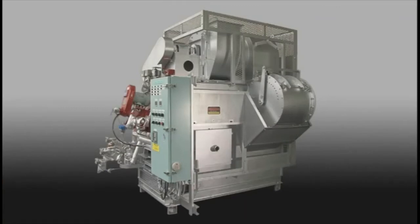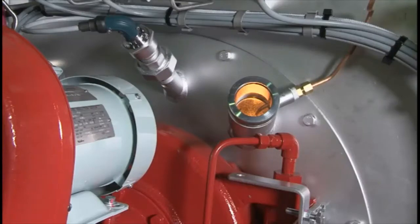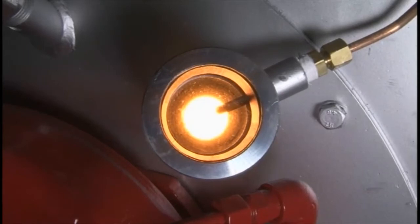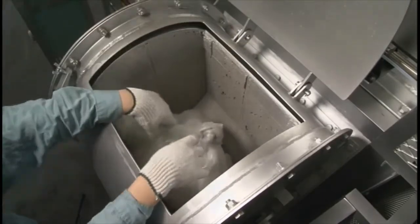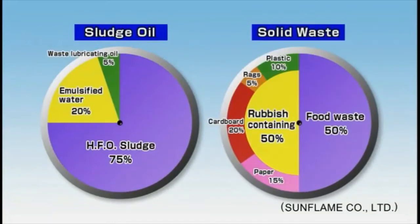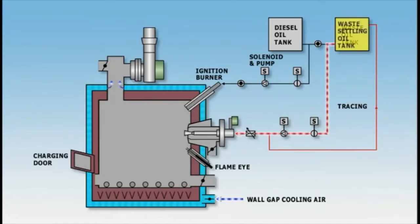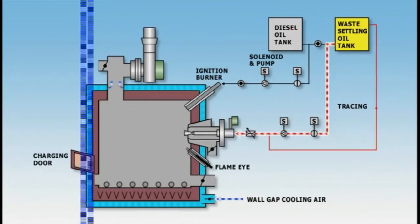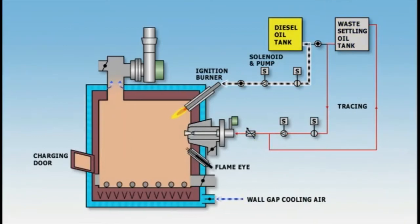The incinerator is used to incinerate waste oil from fuel oils used by the main and auxiliary engines, sludge oil from bilge separators and the like, and household and other solid wastes. After its water content has been evaporated in the waste oil settling tank, the heated waste oil is transferred by a pump via flow regulator and is then ejected from the incinerator burner. A special line returns some of the waste oil via the flow regulator to the waste oil tank. Marine diesel oil (MDO) is used for the ignition burner.